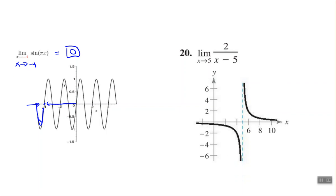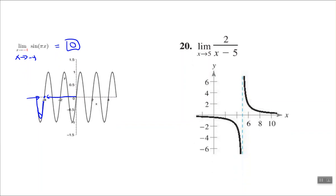What about number 20 — the limit of 2 over x minus 5 as x approaches 5? As x approaches 5 from the right, the function begins to increase and continues to increase, going towards positive infinity. As I approach from the left, the function begins to decrease and goes towards negative infinity, which means the limit does not exist.